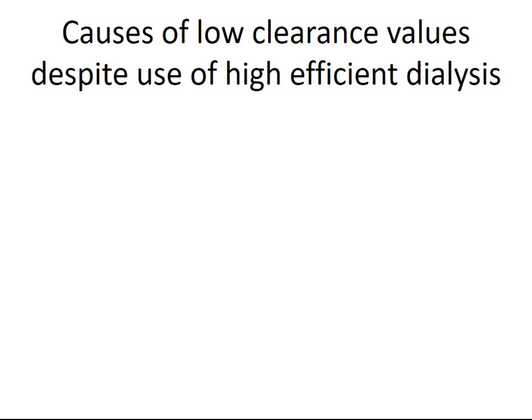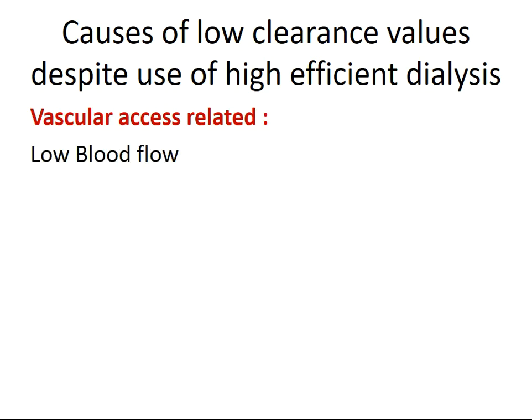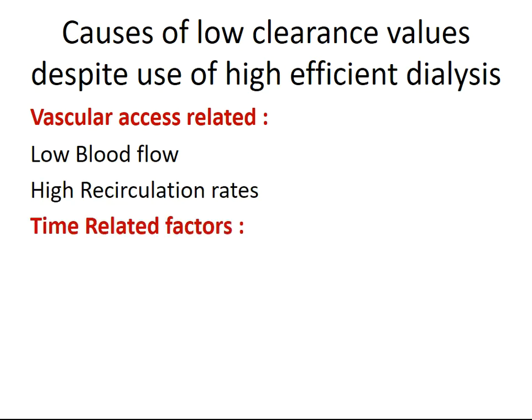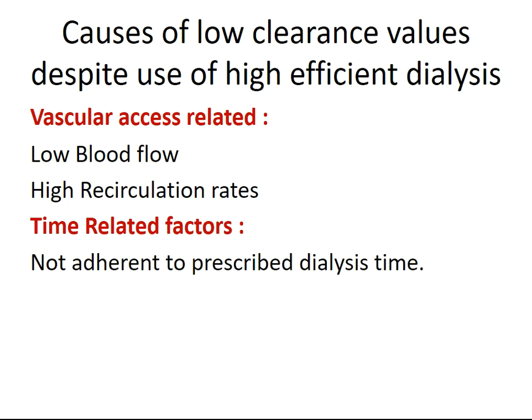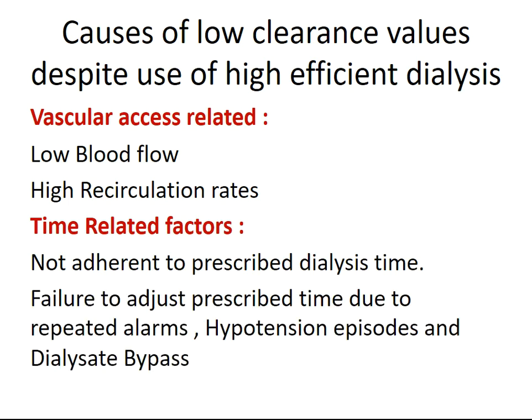Causes of low clearance value despite use of high-efficiency dialysis include vascular access-related causes such as low blood flow and high recirculation rate. Time-related factors include non-adherence to prescribed dialysis, failure to adjust prescribed time due to repeated alarms, hypotension episodes, and dialyzer bypass.